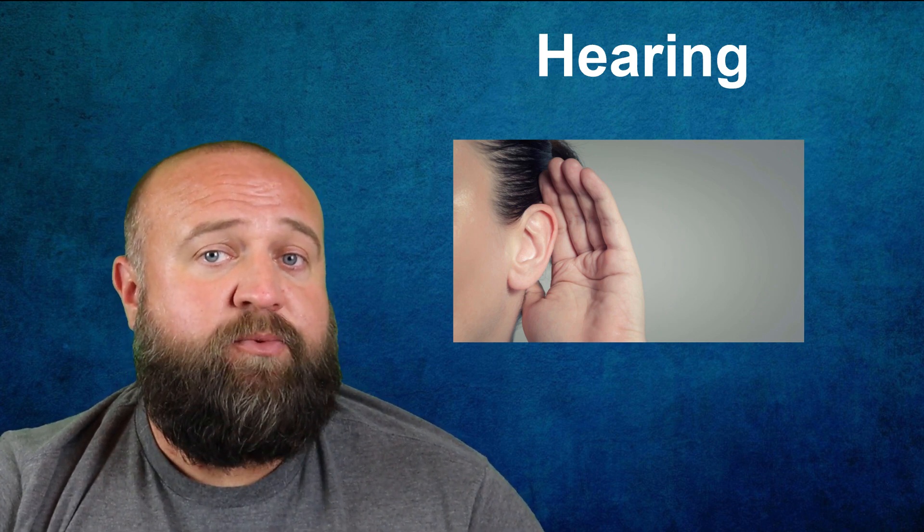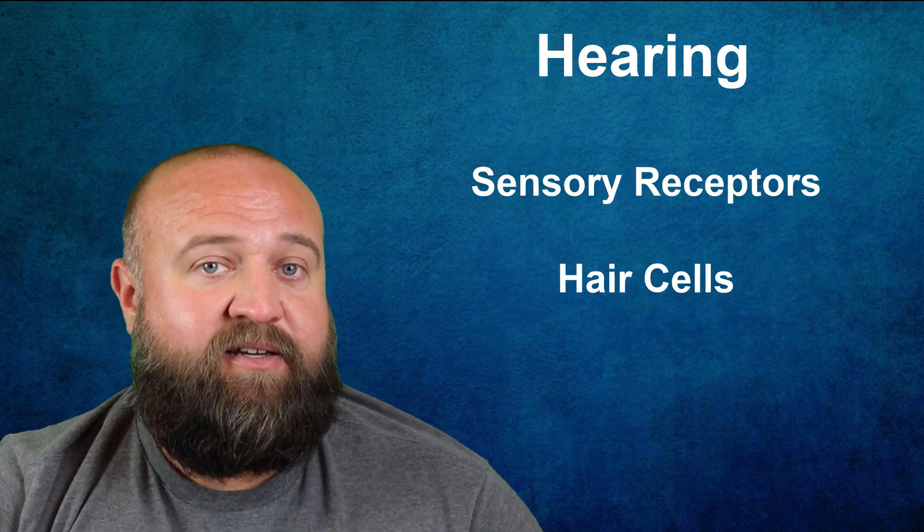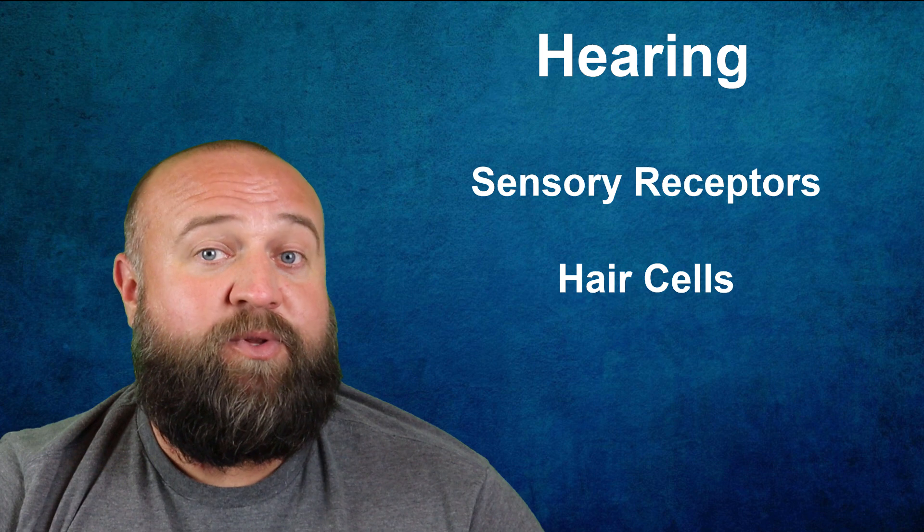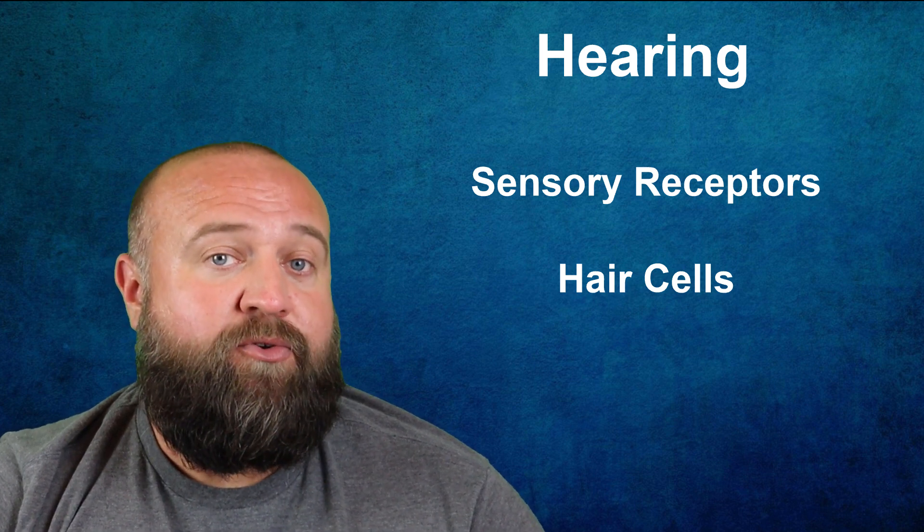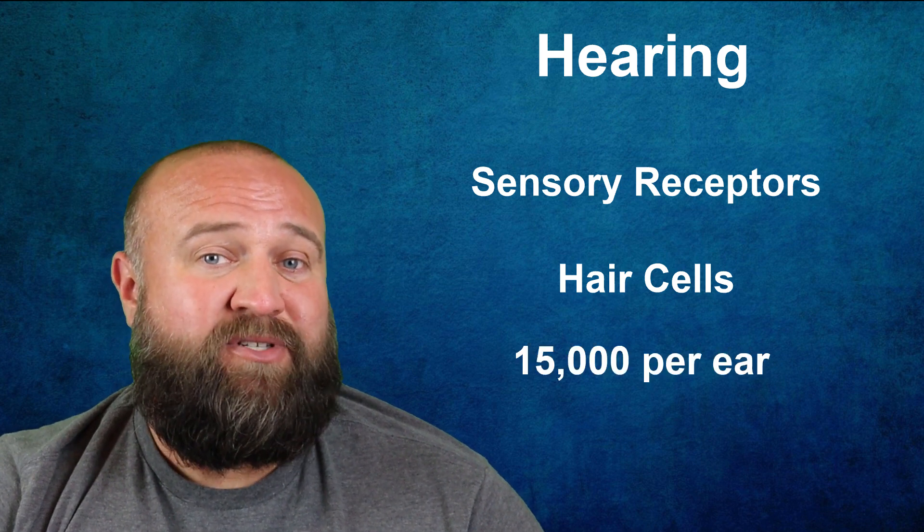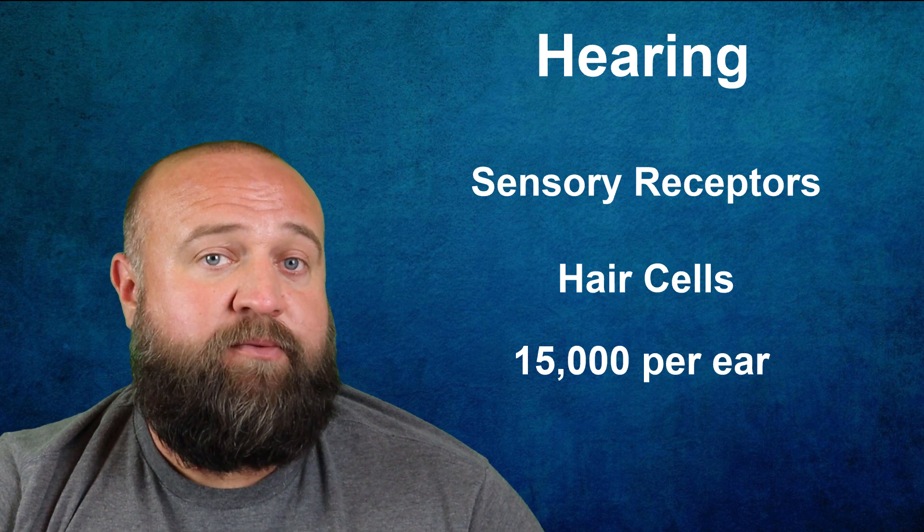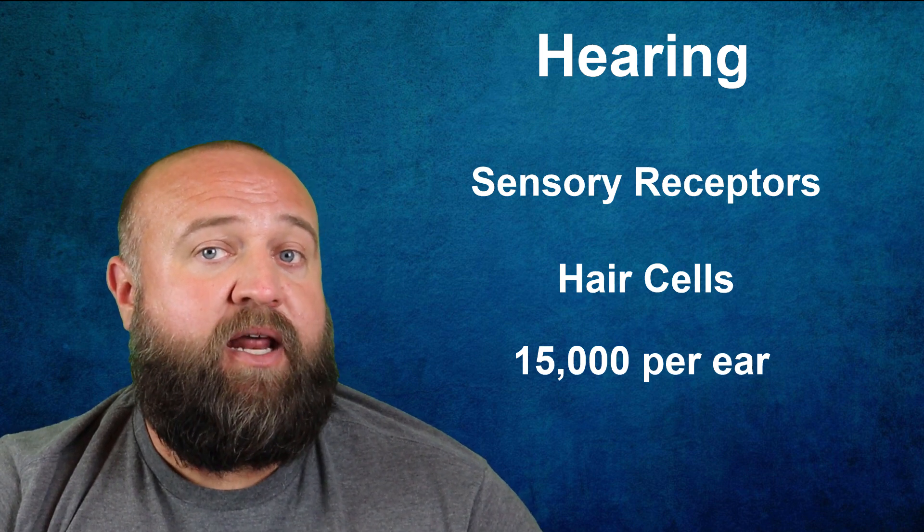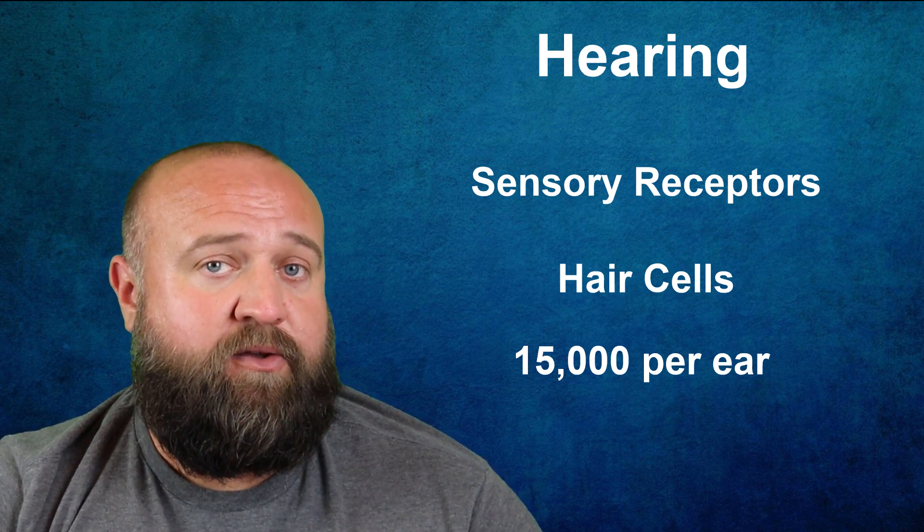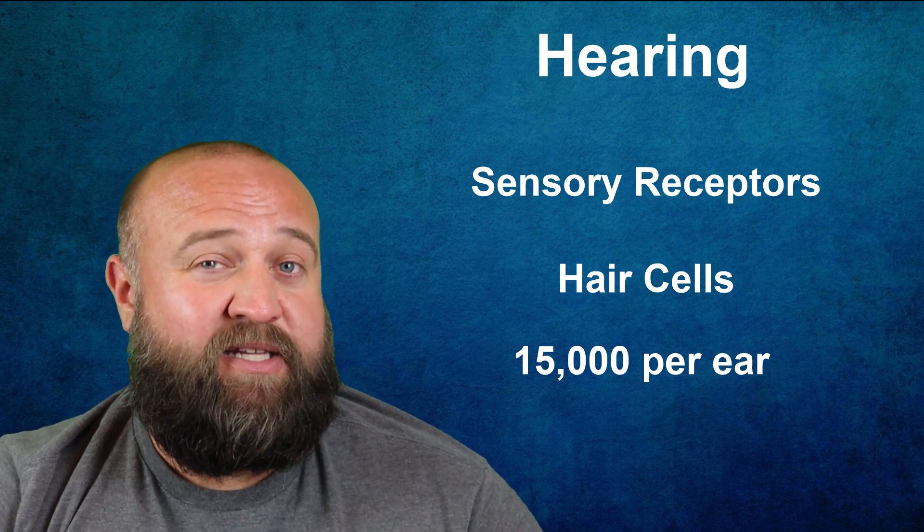Now, the cochlea is lined with specialized sensory receptors called hair cells. These hair cells interact with the waves and connect with neurons that allow us to process sounds. There are about 15,000 hair cells in each ear, and they process information slightly different depending on where they're located within the cochlea.